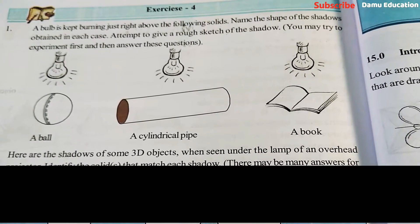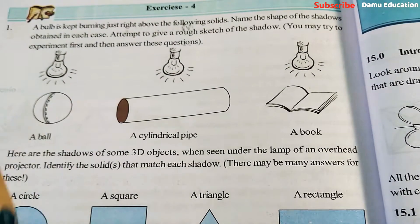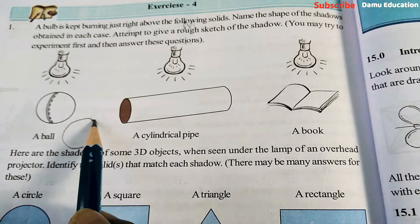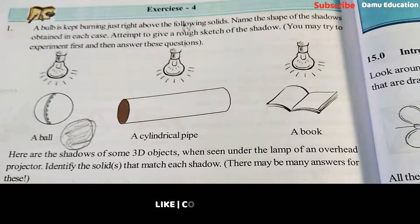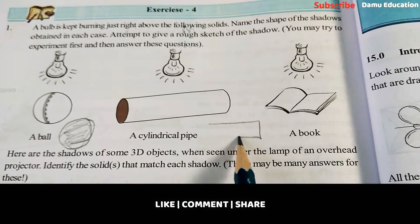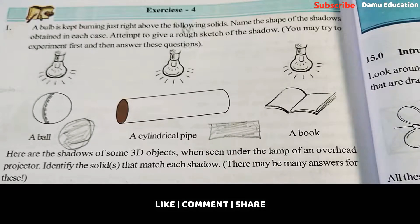So if you keep a ball under a burning light, you'll get a circular shape. Then if you keep a cylindrical pipe, you will get a rectangle shape.